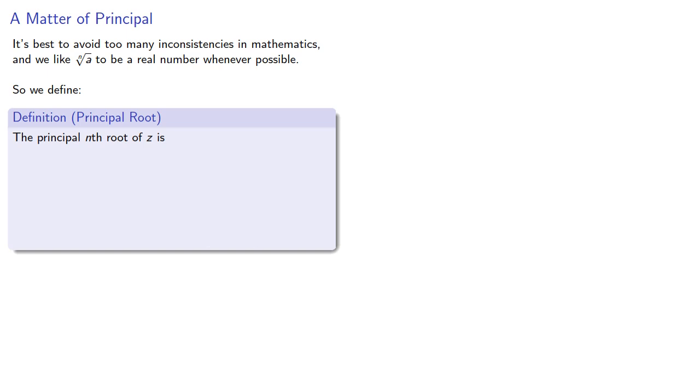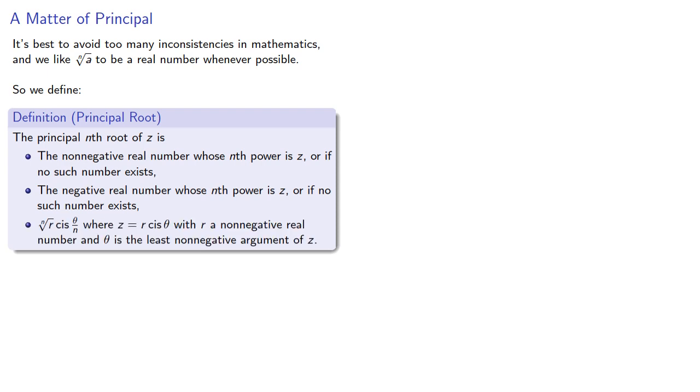The principal nth root of z is: The non-negative number whose nth power is z, or if no such number exists, the negative real number whose nth power is z, or if no such number exists, the nth root of r cis(θ/n), where z = r cis θ, with r a non-negative real number, and θ the least non-negative argument of z.